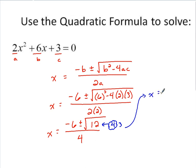If I simplify this further, x is going to equal negative 6 plus or minus, if I take the square root of 4, 2 pops out. We've got square root of 3 left over, all over 4.